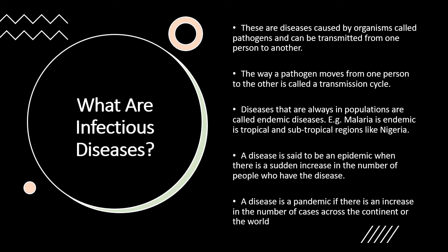The way a pathogen moves from one person to another is called a transmission cycle. For example, if you've come down with a cold and you sneeze next to a person or hug them, they tend to develop the same condition maybe two or three days later. That itself is a transmission cycle — the pathogen has moved from one person to another.